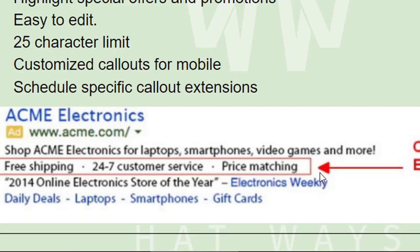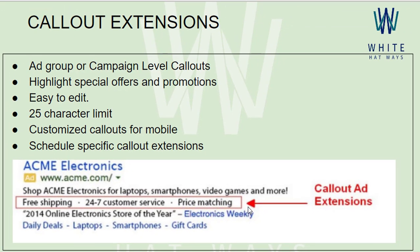They encourage people to click and explore your ad, leading them to the landing page. The third point is that callout extensions are easy to edit — and not only easy to edit, but also easy to make. It's just a couple of steps required. All you need to know is what you wish to highlight about your product or service. It's just simple one-liners, and there is a 25-character limit.